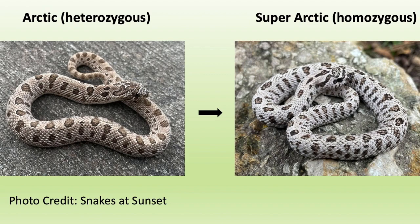The other incomplete dominant gene in hognose snakes is the arctic gene. On the left you can see the heterozygous form, where the snake has one copy. Compared to a normal snake, the arctic gene lightens the background, gives it a grayish color, and makes the saddles pop — you start seeing black coloring around the outline of the saddles, especially around the head stem.